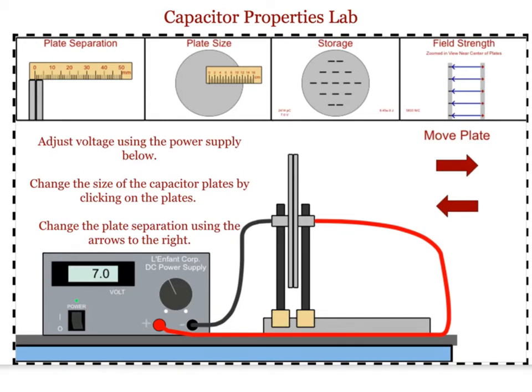To measure the size of the plate, students will click on this tab. It looks like the plates are around 12.2 centimeters for a radius, and they can use that to calculate the area of the plates.